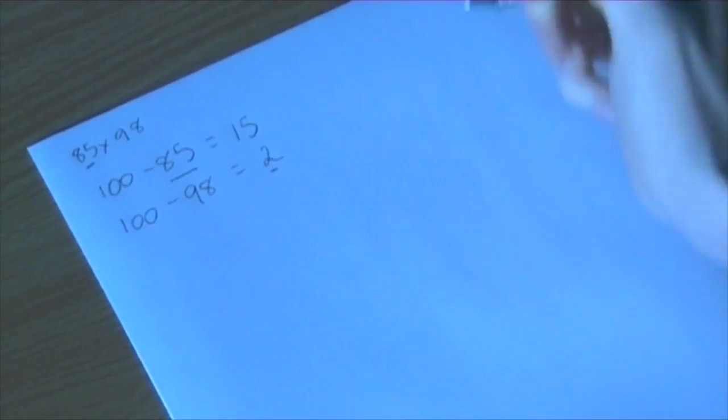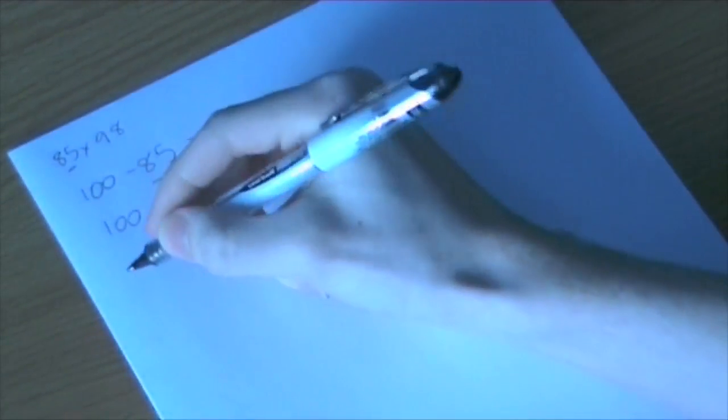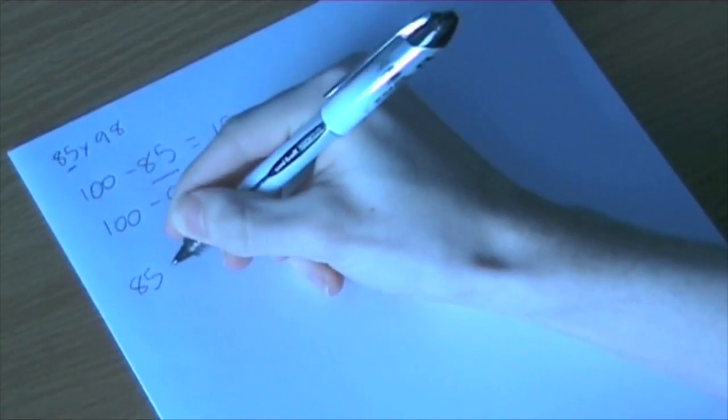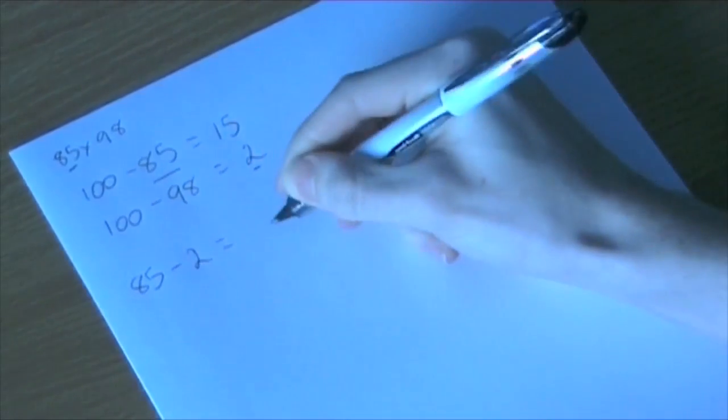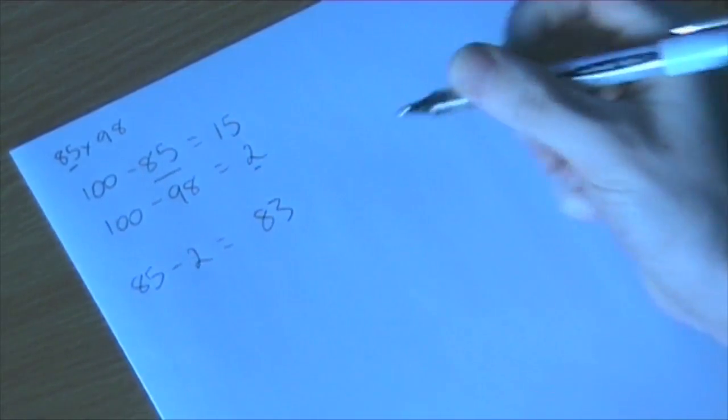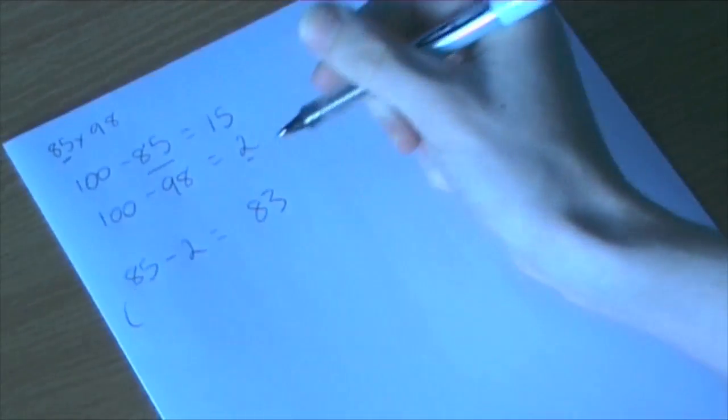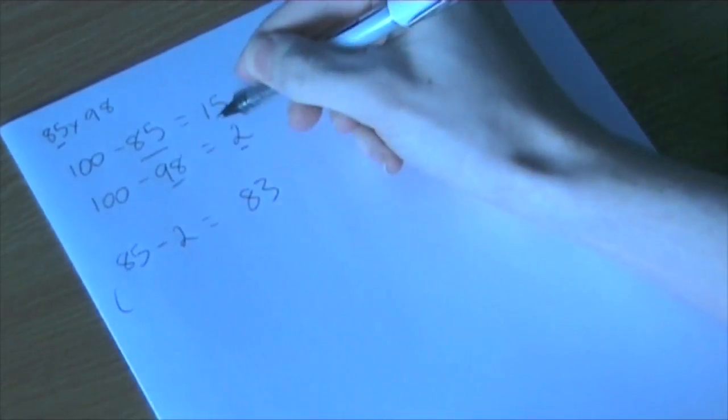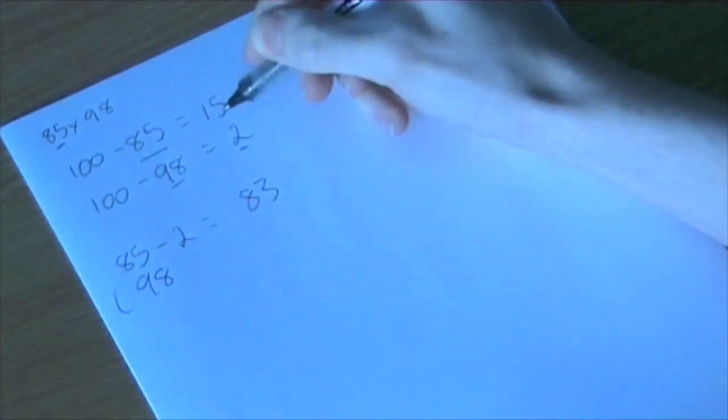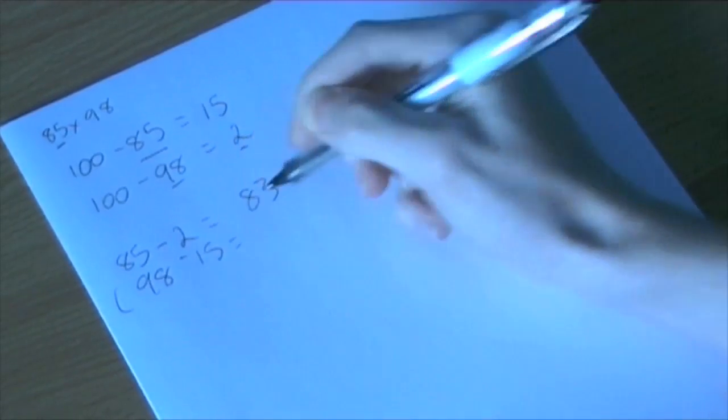So if we take the 85, or rather that one, and the 2, well if we subtract them 85 subtract 2, we get 83. And just to demonstrate if I also did 98 subtract 15, we also get 83.